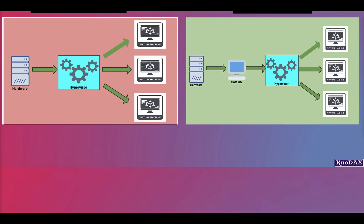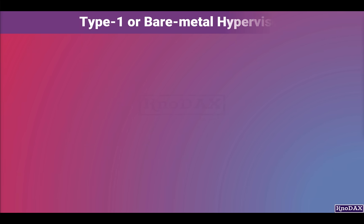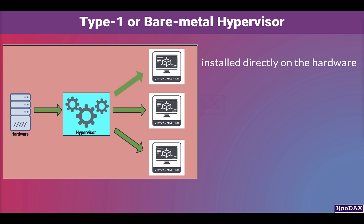Let's talk further about type 1, or bare metal hypervisor. It is installed directly on the hardware. In other words, type 1 replaces the operating system — in place of the operating system, we install type 1 hypervisor. Type 1 or bare metal hypervisor is typically most commonly deployed. Number 1: since it is directly installed on the hardware as opposed to on the OS, which at times can be attack prone, this is considered to be more secure than type 2.